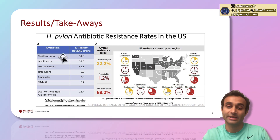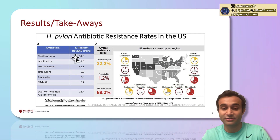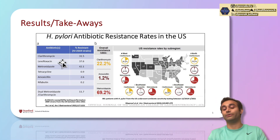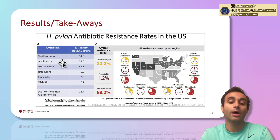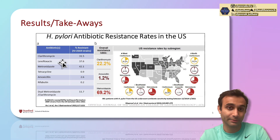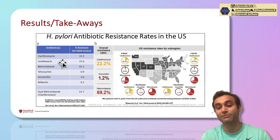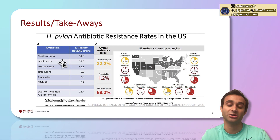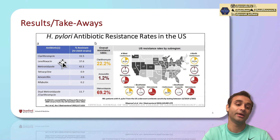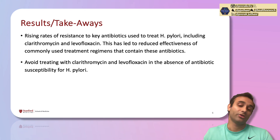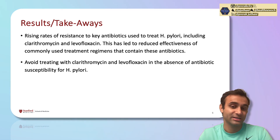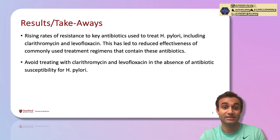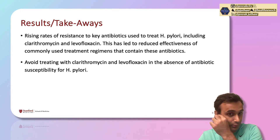Specifically, around 31.5% of strains are resistant to clarithromycin, and about 37.6% of strains are resistant to levofloxacin. Both of these were previously recommended drugs to treat H. pylori, but because of these increasing resistance rates, the official guidelines are changing regarding what we should use.